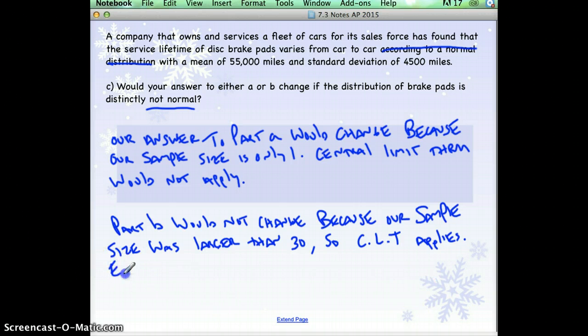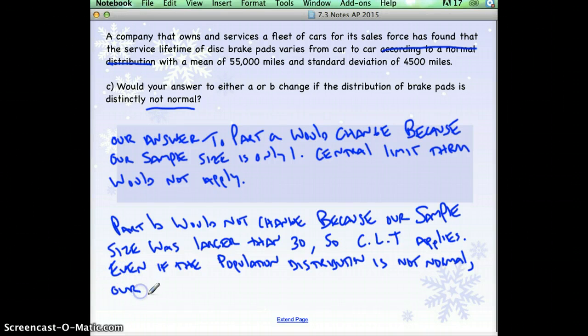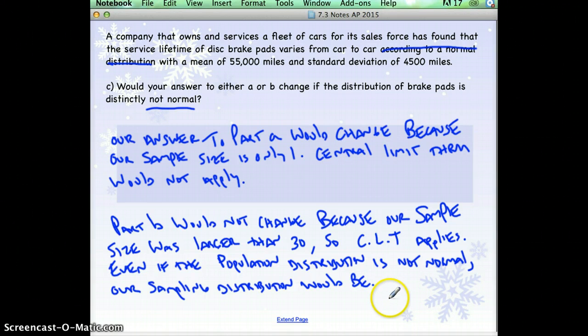Even, here's what I would say, even if the population distribution is not normal, our sampling distribution would be. So, the general idea is even if your population doesn't look normal or you don't have any information about it being normal, if your sample size is larger than 30, then your sampling distribution will be approximately normal.